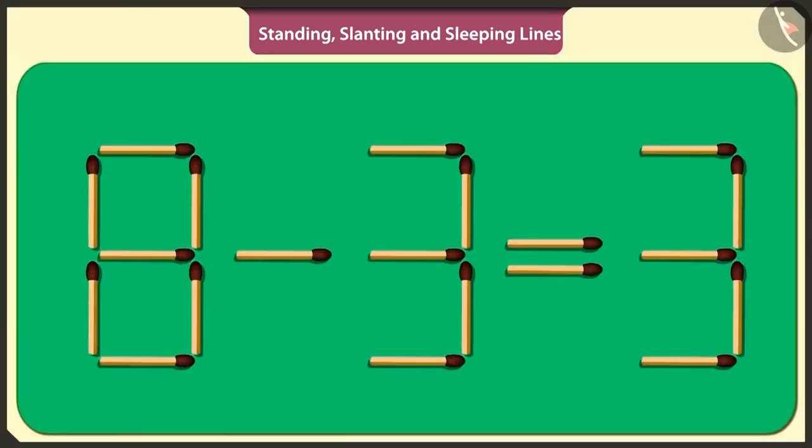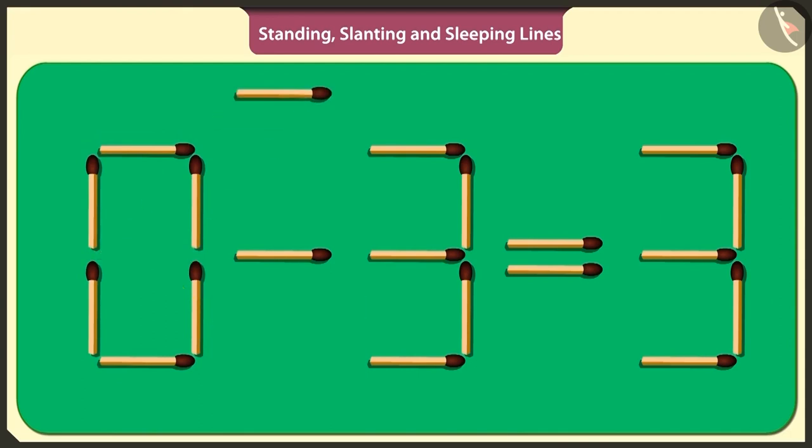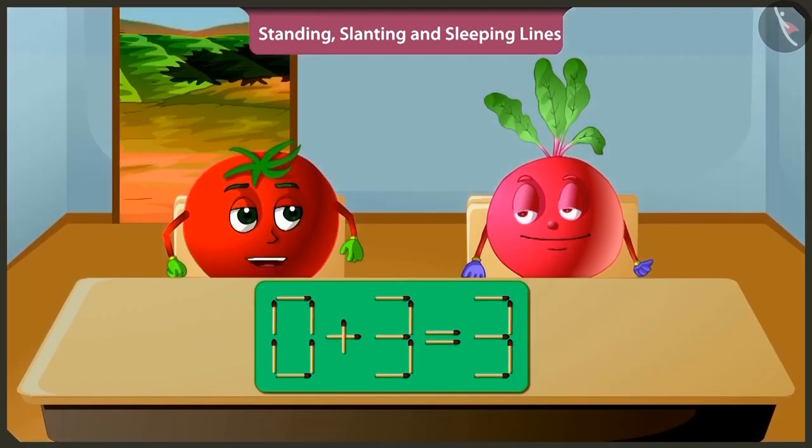Okay. If I lift this sleeping stick in the middle of number eight and place it above the symbol of subtraction like this, then the puzzle will be solved. Yes, adding three to zero will make three only. Well done.